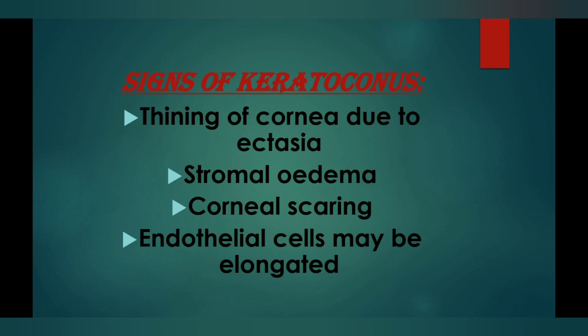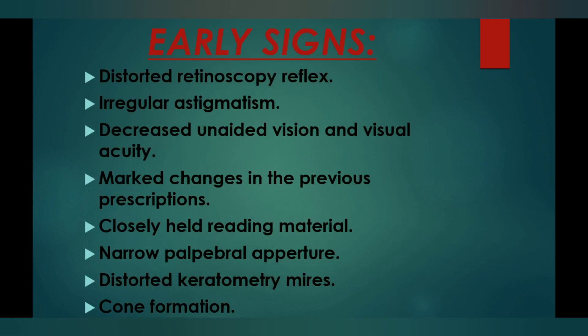The early signs of keratoconus include: when you perform retinoscopy, the reflex is distorted. Irregular astigmatism is seen, along with decreased unaided vision and visual acuity. You will also notice marked changes in previous prescriptions — when you look at the history of glasses, you will see changes in those prescriptions.